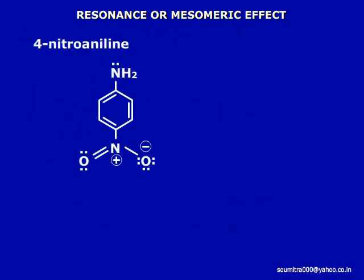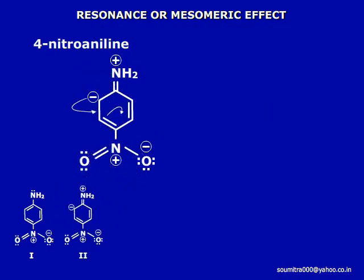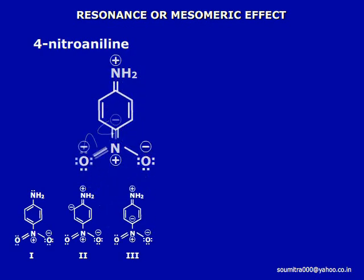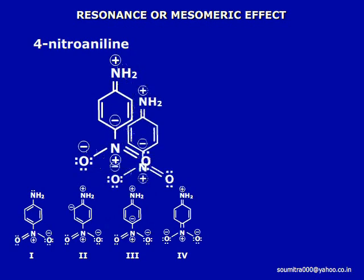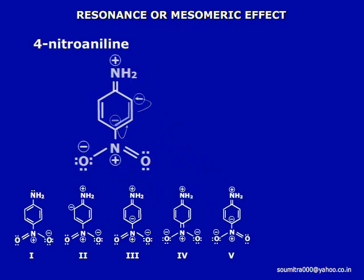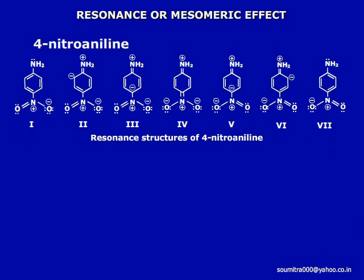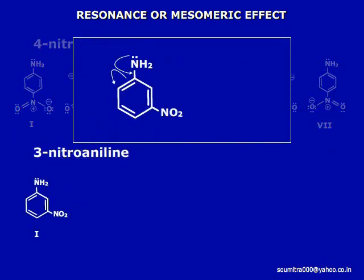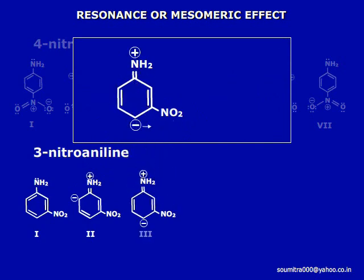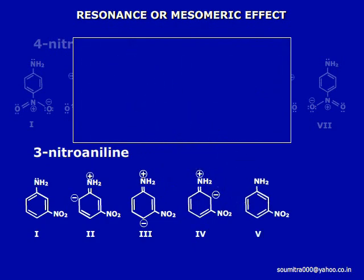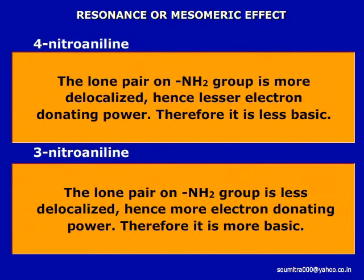For example, in 4-nitroaniline, the lone pair on the NH2 group is dispersed over the entire molecule. This is not possible in the case of 3-nitroaniline. Therefore, 4-nitroaniline is more stable and hence less basic than 3-nitroaniline.